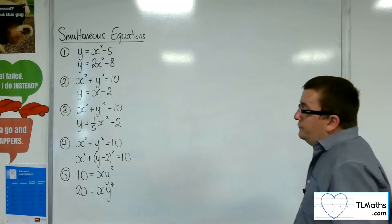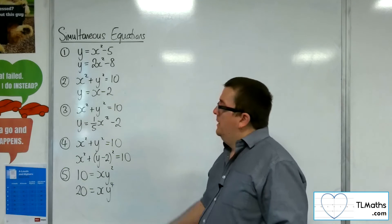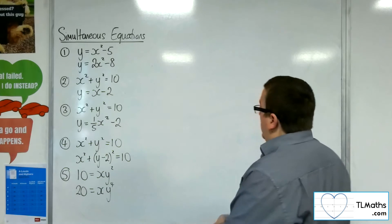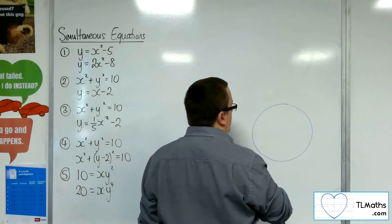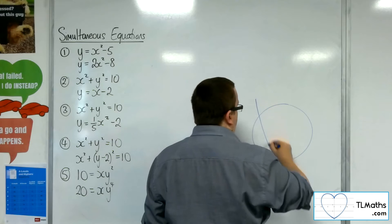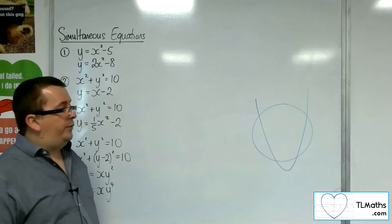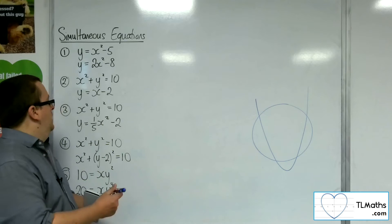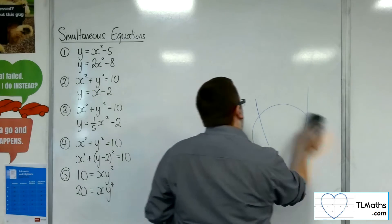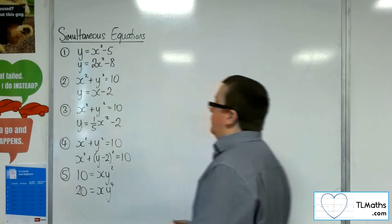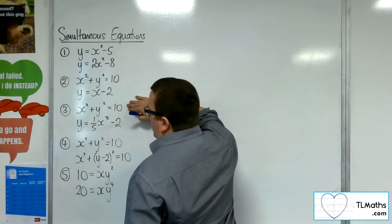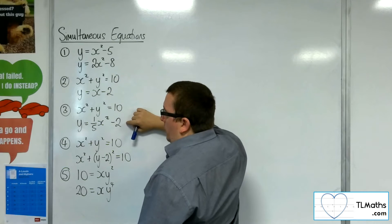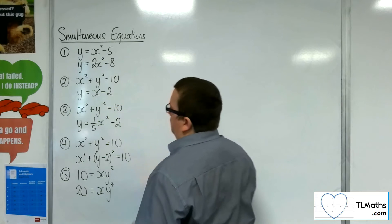Number 3: we've got a circle and a quadratic — a parabola. The possibilities with a circle and a parabola is that you could have the parabola crossing through at up to 4 points. We don't know how many solutions there are, but there could be up to 4. We've got the same circle again, and y equals one-fifth x squared minus 2. I'm going to substitute the one-fifth x squared minus 2 in — same method as before.